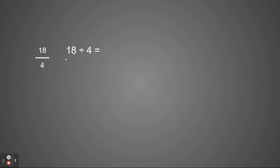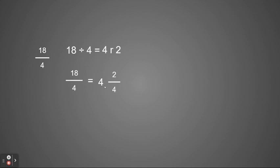Let's try some more. I have eighteen fourths. I'm going to start by dividing eighteen by four — my numerator divided by my denominator. Four goes into eighteen four times with a remainder of two. So eighteen fourths is going to be equal to four wholes and two fourths. Notice the remainder is just being broken into a fractional part — we talked about how a remainder can be used as a fraction.